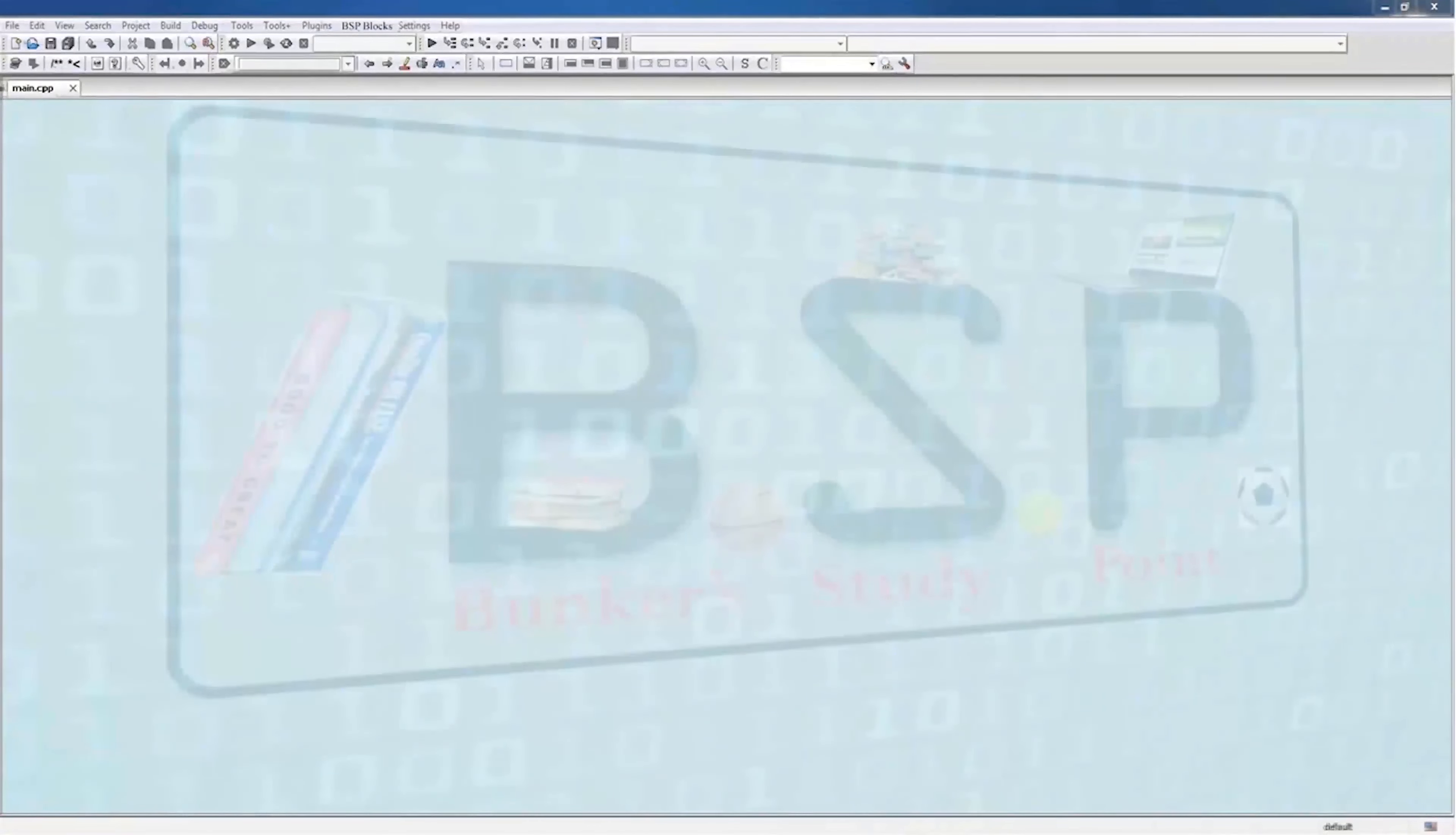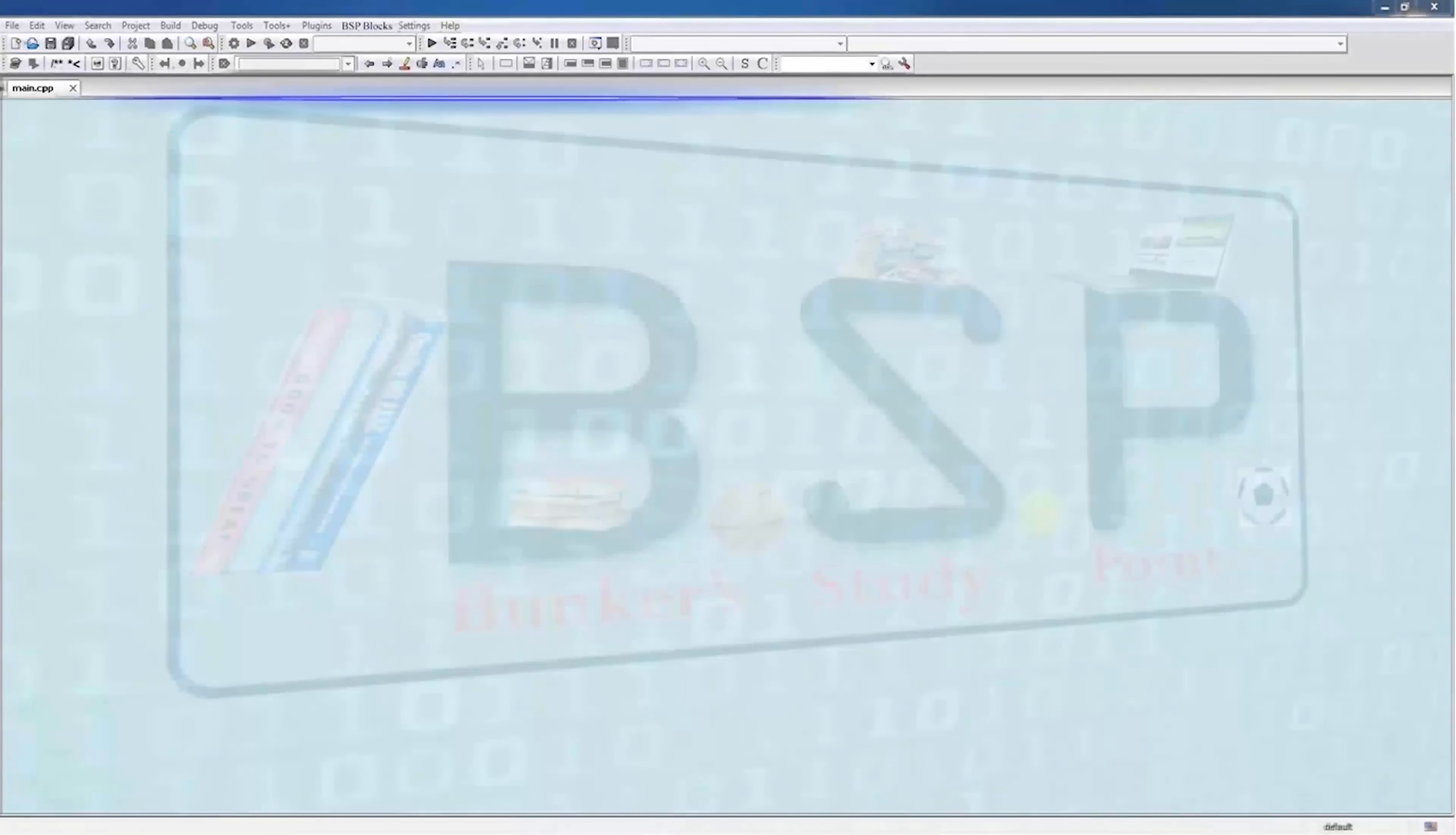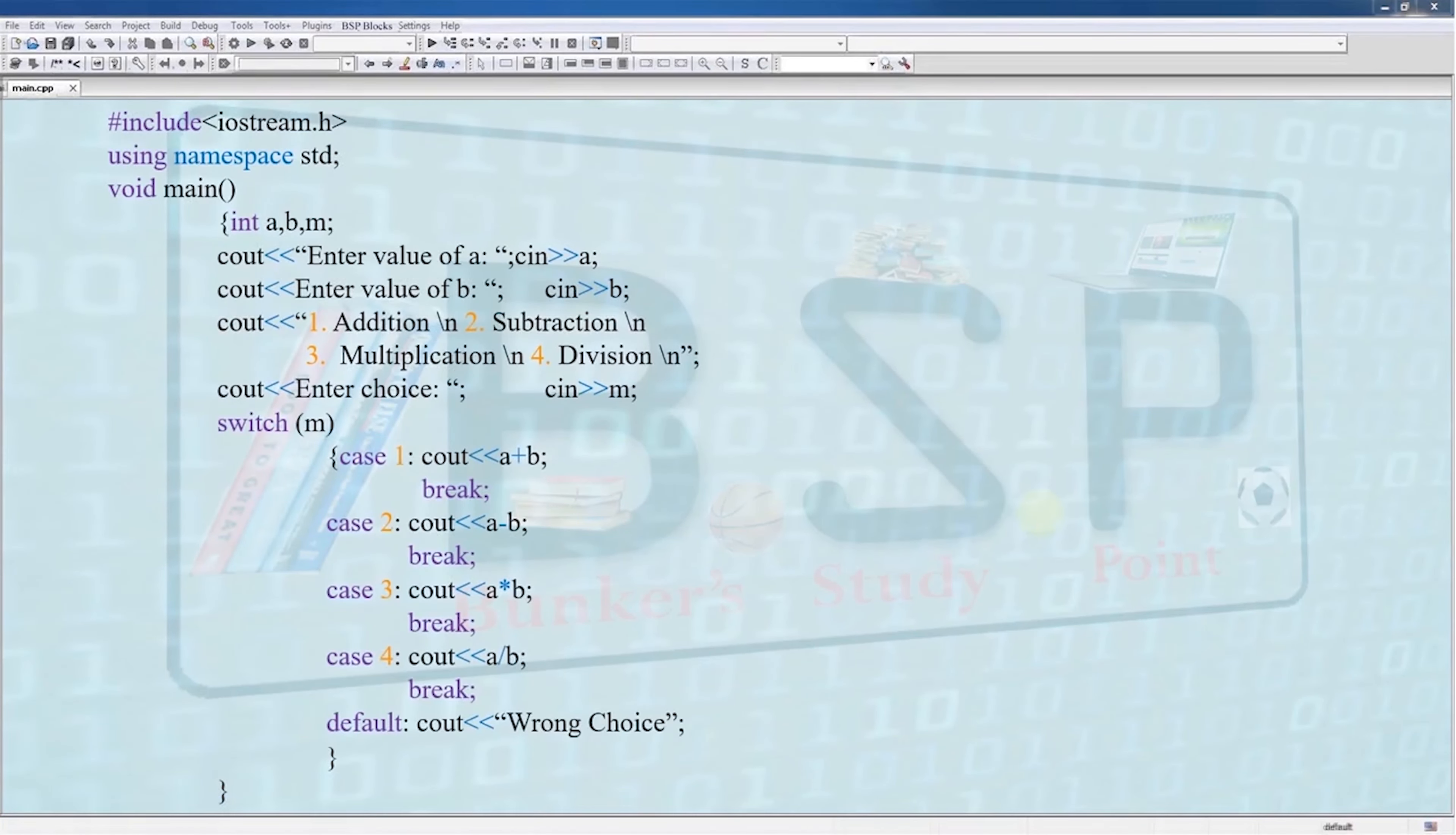For further practice, let's take the question we took at the start of this video. Write a program to input 2 numbers and ask user which operation of the 4 arithmetic ones should be performed: addition, subtraction, multiplication, and division, and print the answer accordingly. In place of nested if-else, now we have used switch in this statement. Here also we have a checking variable m, two variables a and b for storing the values that need to be processed.